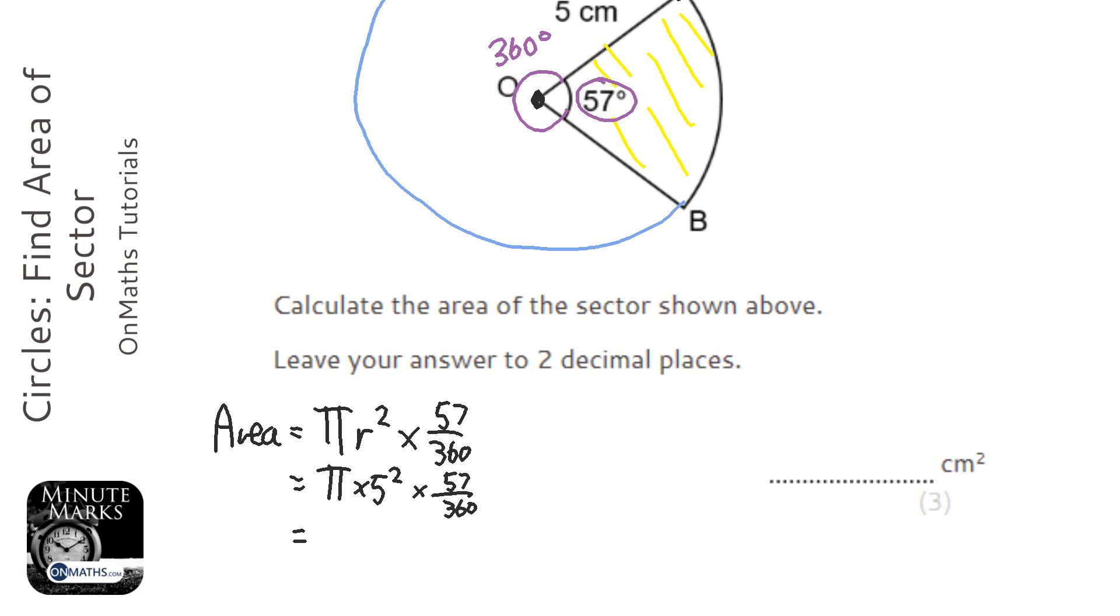So I'm going to do pi times 5 squared times—and then press the fraction button—57 over 360, and it gives me 12.43547 blah blah blah. And to two decimal places, that's going to be 12.44 because that 5 moves that 3 up to a 4.